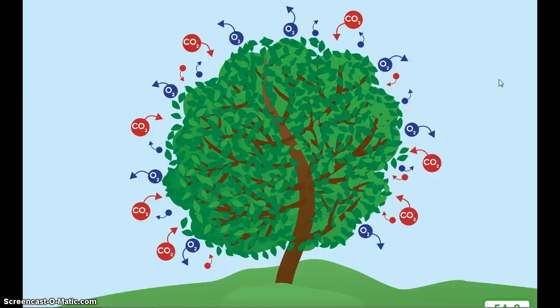The roots of trees help fight erosion and flooding by holding soil and absorbing water from the soil. And finally, we use trees, or the wood that comes from trees, all over the world for all kinds of things. Can you think of three things that the wood from trees is used for?